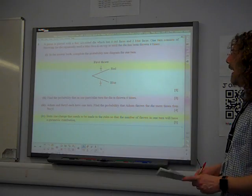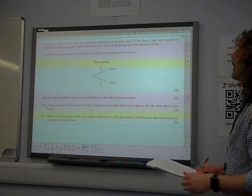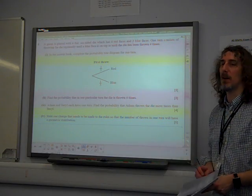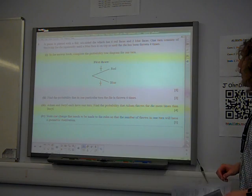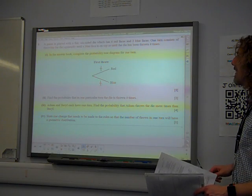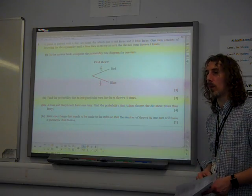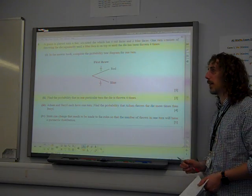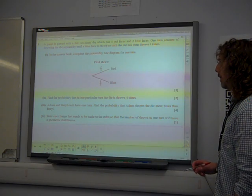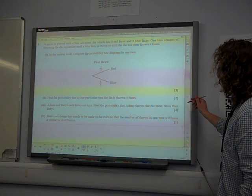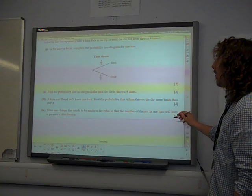A game is played with a fair six-sided die which has four red faces and two blue faces. One turn consists of throwing the die repeatedly until a blue face is on top, or until the die has been thrown four times. This is quite an aggressive game. In the answer, complete the following probability tree diagram for one turn.